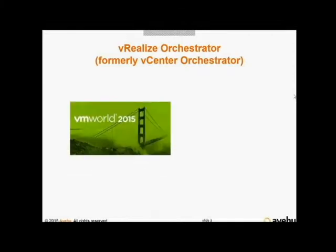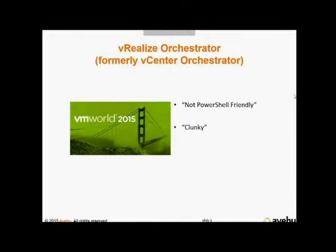At the beginning of September, we exhibited at VMworld 2015 in San Francisco. People visiting our booth unexpectedly told us about a number of problematic issues they have with VMware's Orchestrator, including it's not PowerShell-friendly — people are having many problems running PowerShell scripts. Some people said it was clunky; whatever you want to automate, there's going to be a lot of assembly required. It requires a lot of JavaScript, which begs the question: if you need to do lots of JavaScript coding, how much of this can really be called automation?